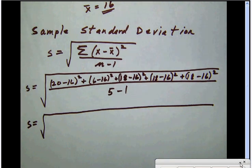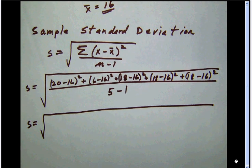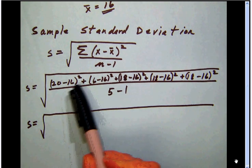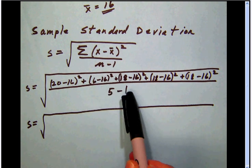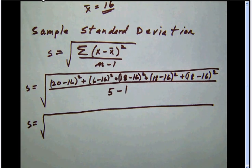Okay, I've made some progress on this now. Notice that I've taken each of those values. The first one was 20, 20 minus 16, and then square it. The next one was 6, 6 minus 16, and then square it and go ahead and set all those up. I assume that you're doing the same thing and working along with me.